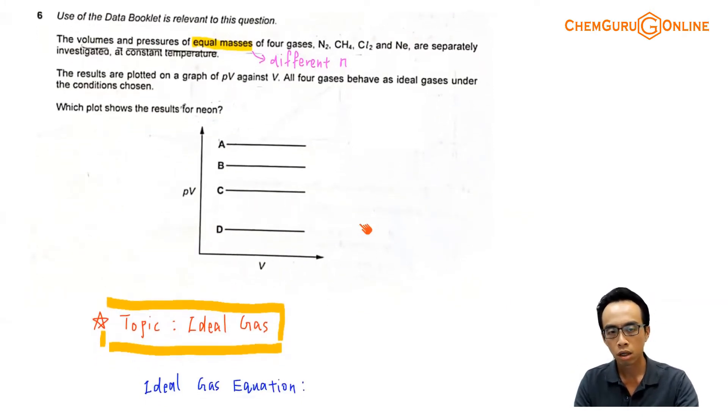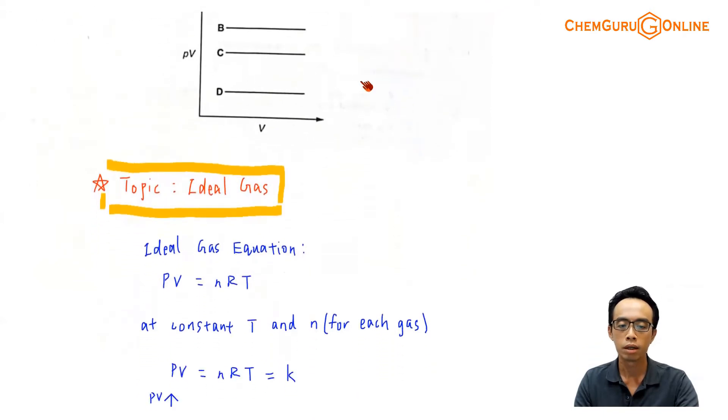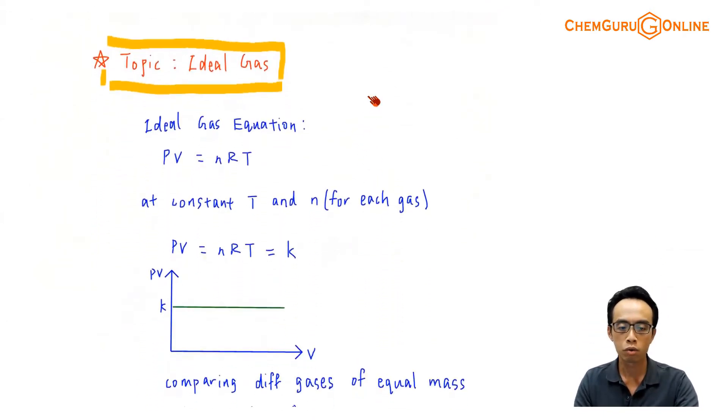Temperature is constant, do keep this in mind. The results are plotted on a graph of PV against V, all 4 gases behave as ideal gases under the conditions chosen. So which plot shows the results for neon? The topic tested obviously for this question will be under ideal gas.